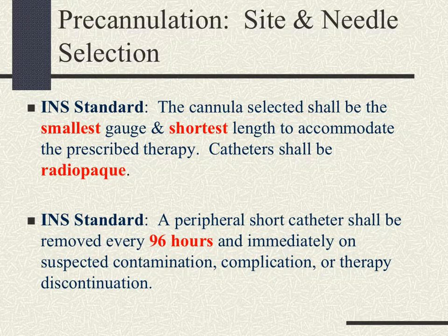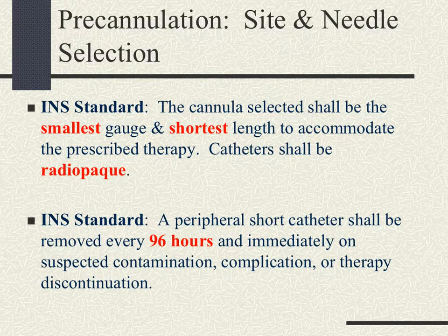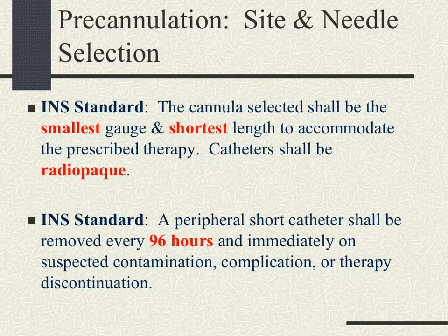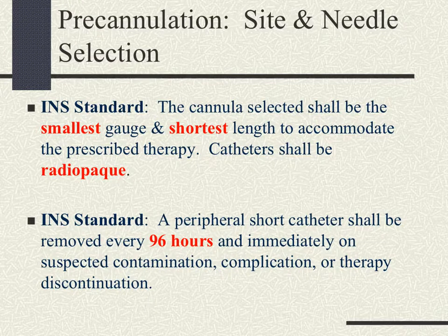The INS standard states that the cannula selected shall be the smallest gauge and the shortest length to accommodate the prescribed therapy. All catheters should be radiopaque so that if they get dislodged, they can be found on x-ray. For hypertonic solutions, 18 to 20 gauge is a good rule of thumb; for blood, 18 to 20 gauge; and for pediatric patients, 22 to 24 gauge. A peripheral short catheter shall be removed every 96 hours and immediately on suspected contamination, complication, or therapy discontinuation.